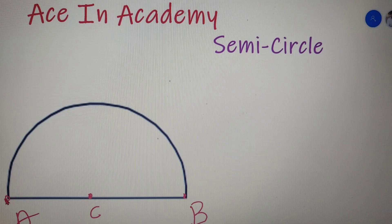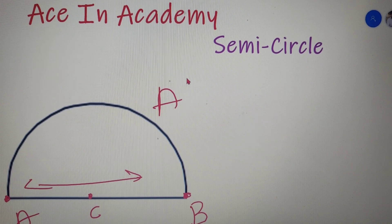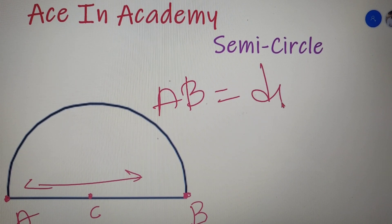The distance between the endpoints of the semicircle is called the diameter of the semicircle. So for this case, AB is equal to the diameter of the semicircle.